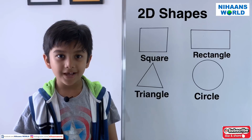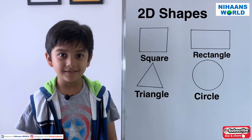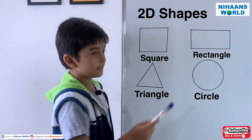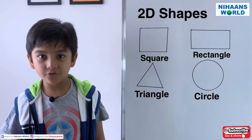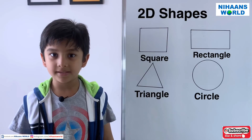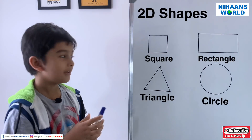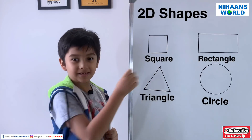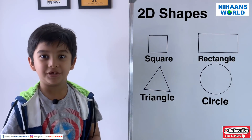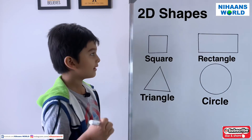Let's learn about 2D shapes. It has two measurements: length and width. Here are some examples of 2D shapes.